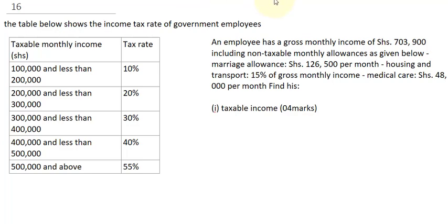Question 16 shows a table of income tax rates for government employees, with several taxable income year ranges and percentage rates. The question states that an employee has a gross monthly income of 703,900, including non-taxable allowances: marriage allowance of 126,500 per month, housing and transport at 15% of gross monthly income.